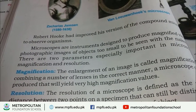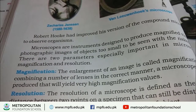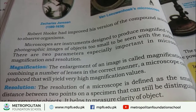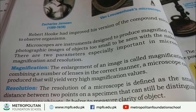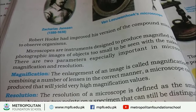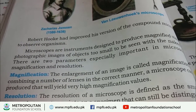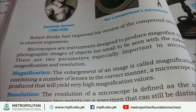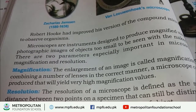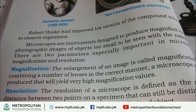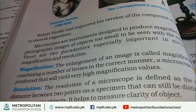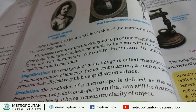The second parameter especially important in a microscope is resolution. The resolution of a microscope is defined as the smallest distance between two points on a specimen that can be distinguished as two separate objects. Resolution helps to measure the clarity of an object.